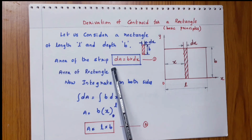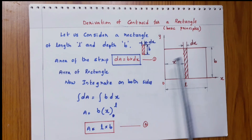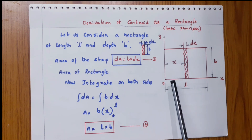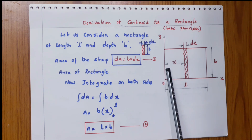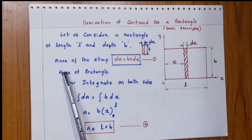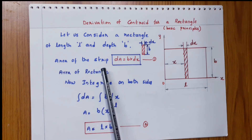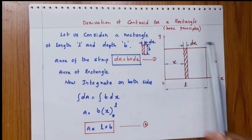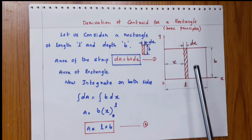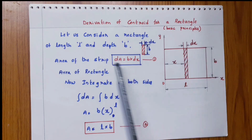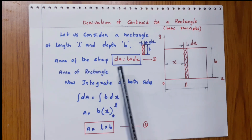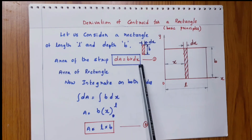Let us consider a strip parallel to the y-axis. The distance from the y-axis to the strip is x, and the strip width is dx. The area of the strip: height is B, so the strip area dA is equal to B into dx. This is equation number 1.